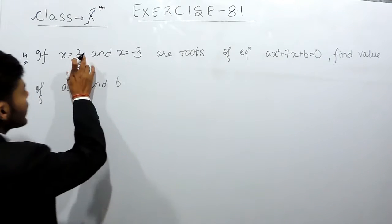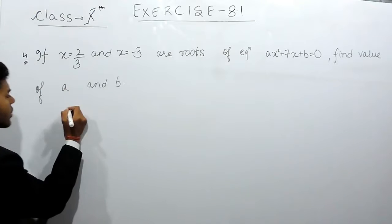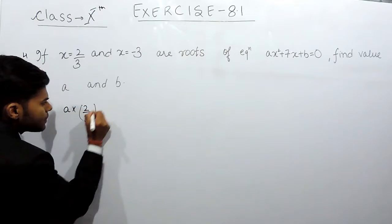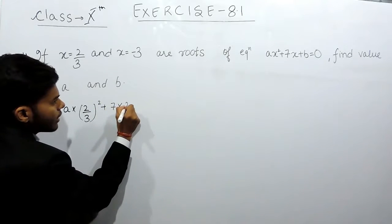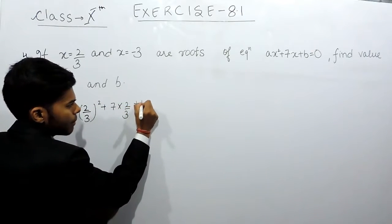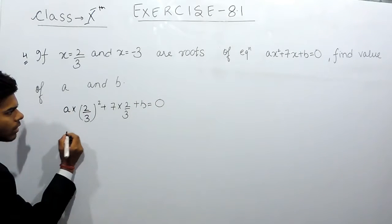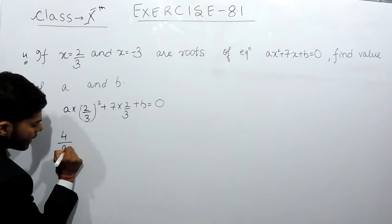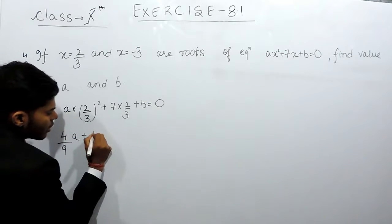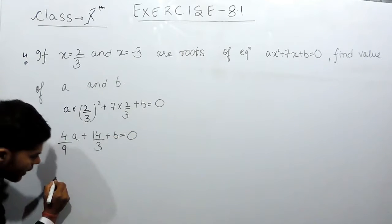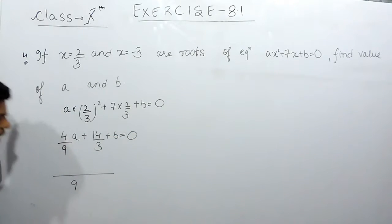So first of all on substituting x equals to 2 by 3 in that equation, a multiplied by the whole square of 2 by 3 plus 7 multiplied by 2 by 3 plus b equals to 0. That will be 4 by 9a plus 14 by 3 plus b equals to 0. We will take the LCM, that will come out to be 9.